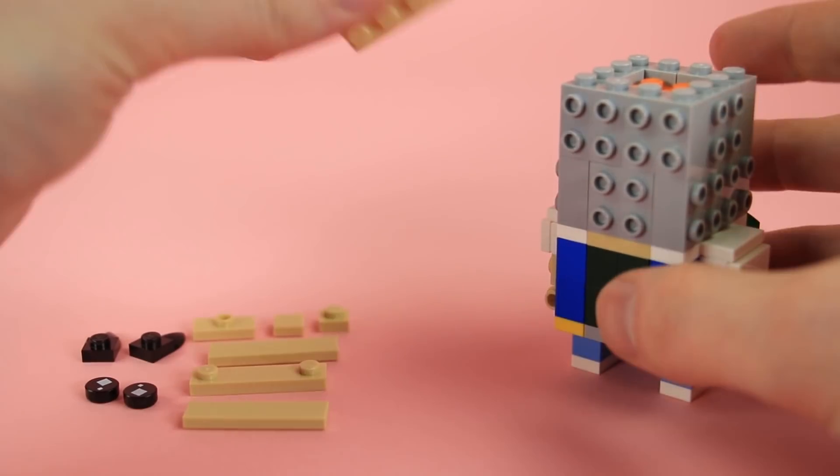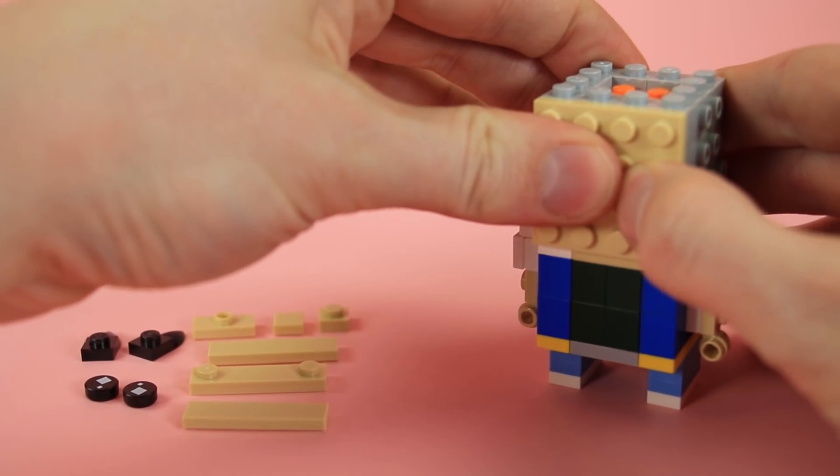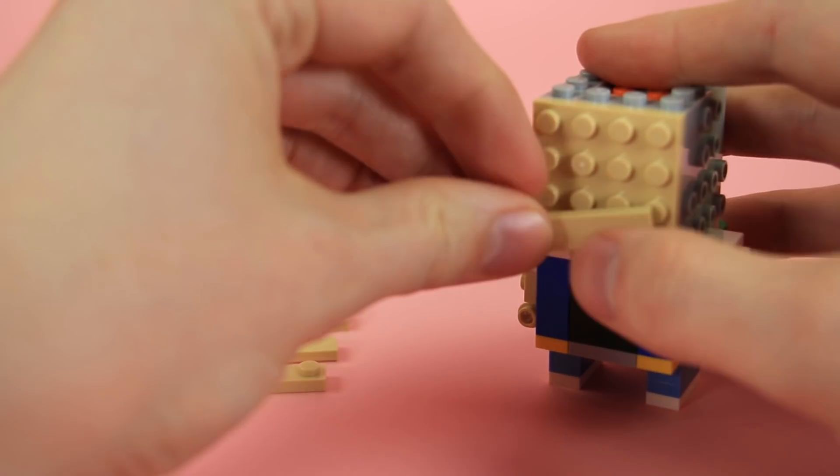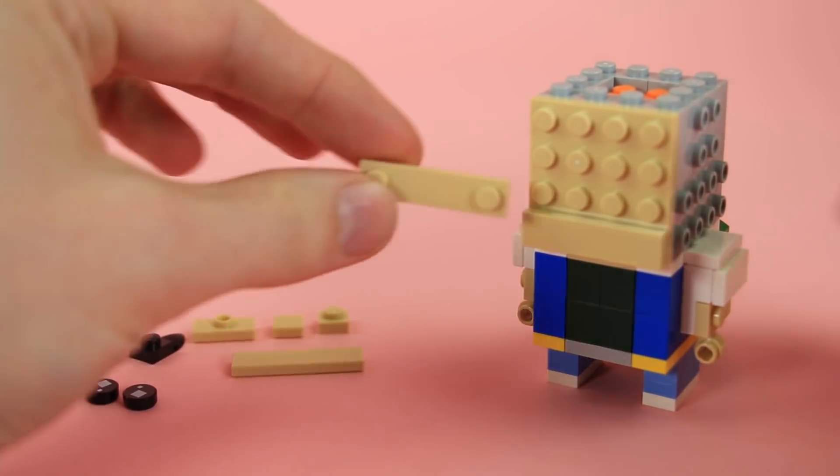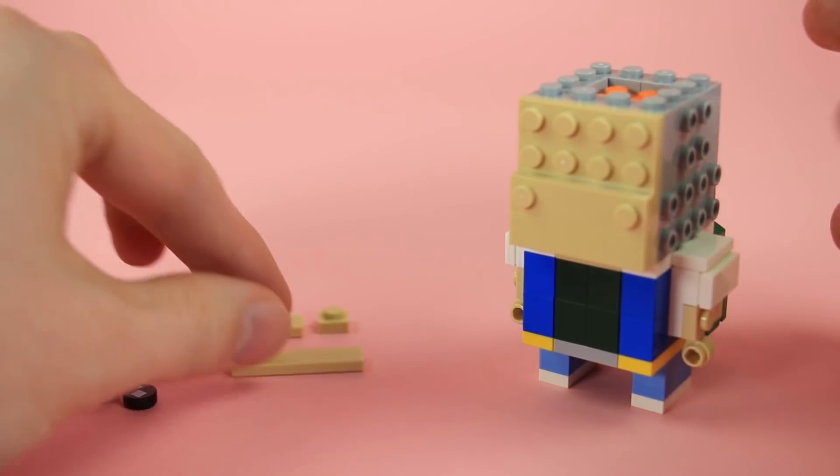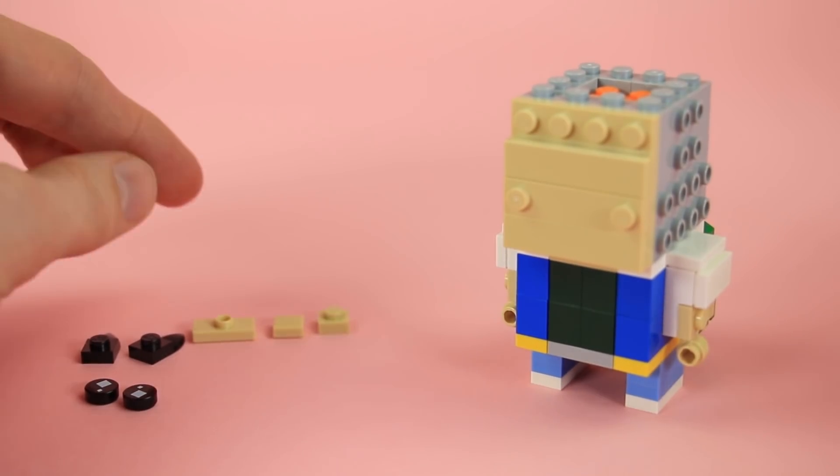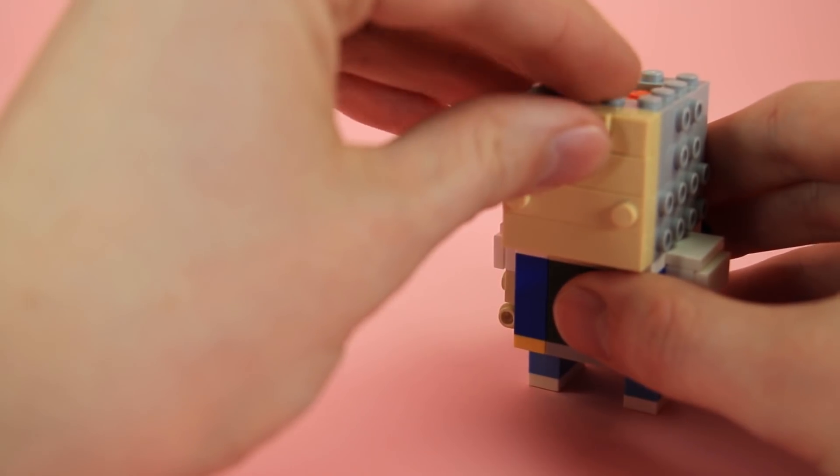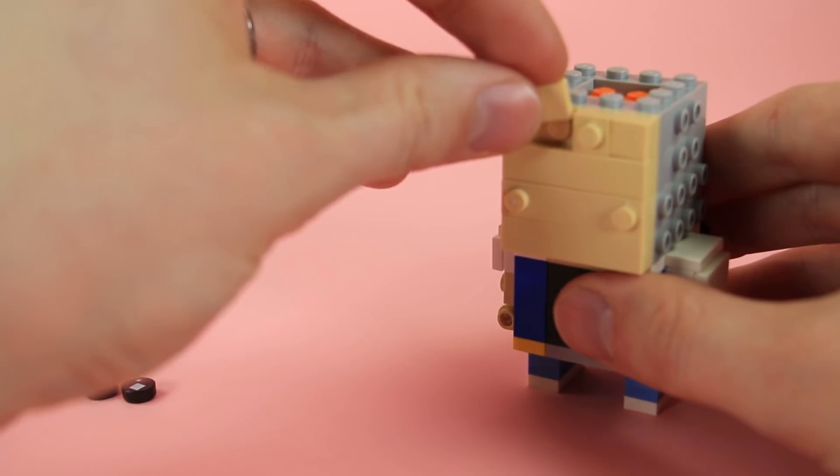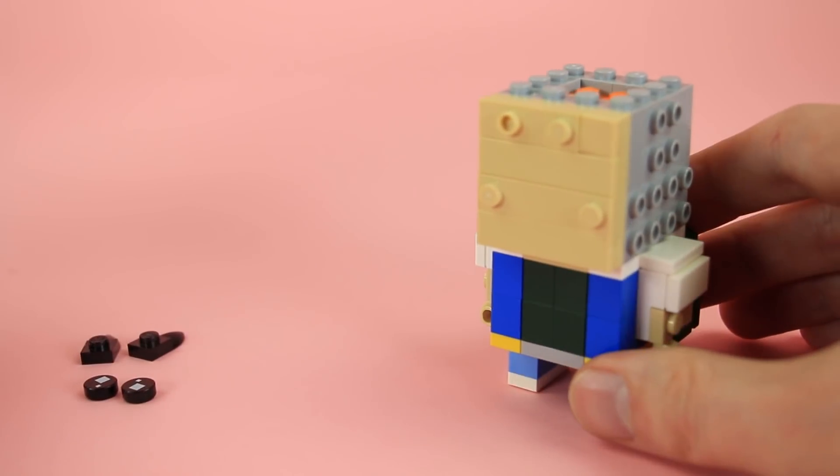For his face gonna start with a 4x4 tan plate. Then a 1x4 tile. One of these fun 1x4 tile with two studs on the end. Another 1x4 tile. Top level is going to be a 1x1 tile, 1x1 plate, and a jumper plate. All in tan of course.